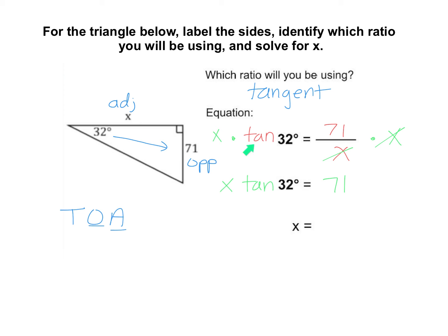In your interactive notebook, you just have to type in what I wrote in red: the tan, the 71, and the x. And then on this next line, the x, the tan, and the 71.